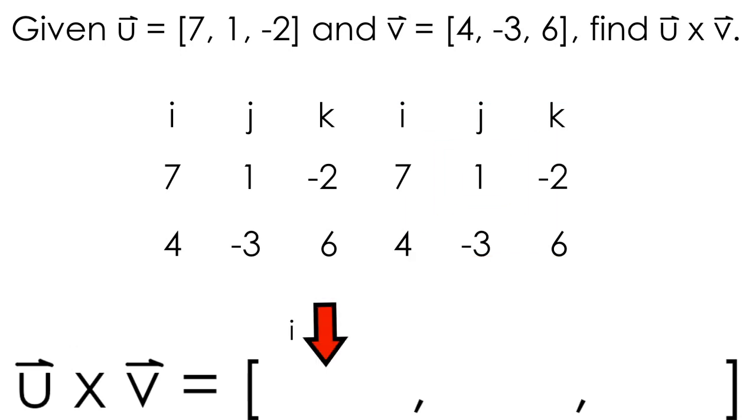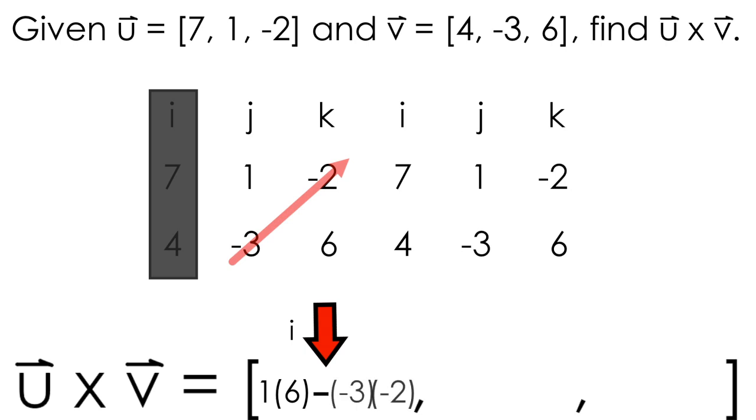Since we're working with i, we cover up the i column in our chart, and this is where our process begins. We multiply on a diagonal from upper left to lower right by taking 1 times 6, and we place the result here. We subtract the multiplication of the lower left to the upper right, or negative 3 times negative 2. Cleaning this up results in 0 as our i component of our cross product.